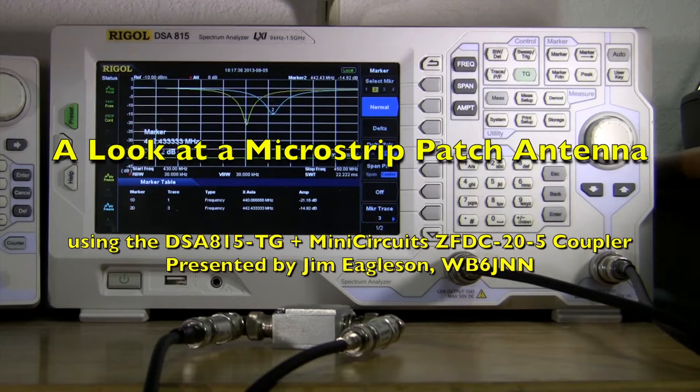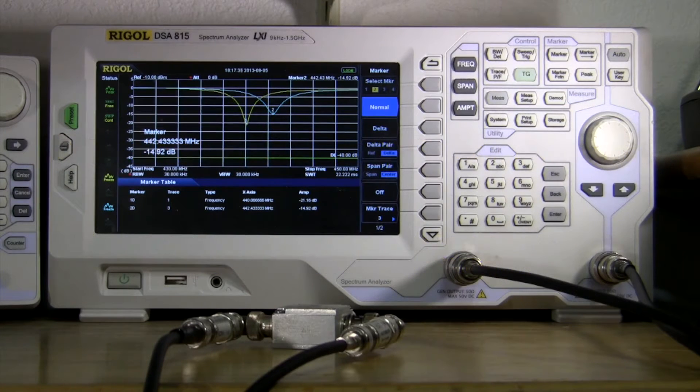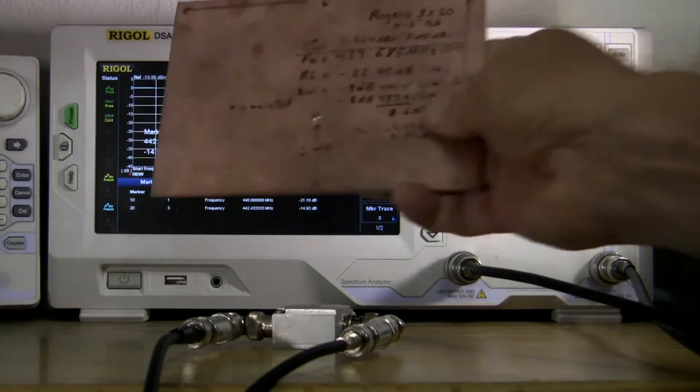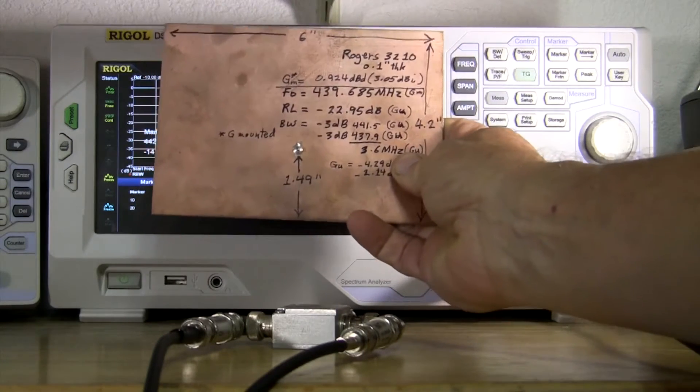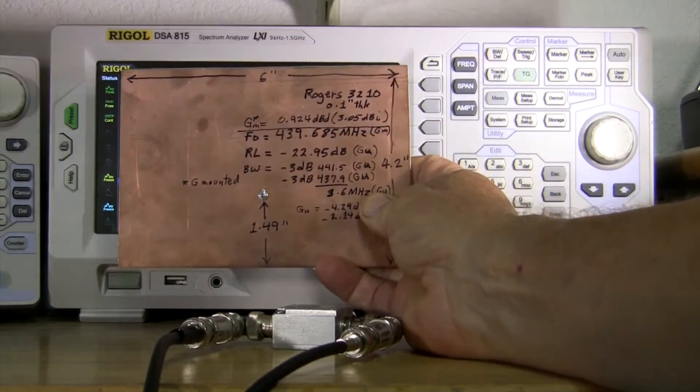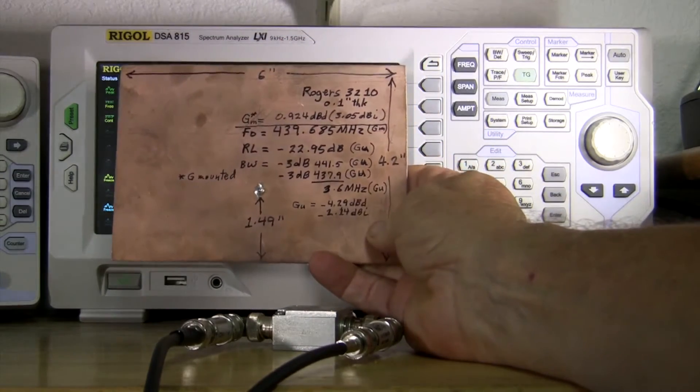I've set up a test setup here to look at an antenna that was a patch antenna made out of Rogers 3210 duroid. This is the patch and it is tenth inch thick.